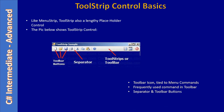A ToolStrip can house toolbar buttons and separators. The separators are used to group commands. For example, all file-related operations are placed together, then there is a separator, followed by Cut, Copy, and Paste grouped together, and then there is a Help button.